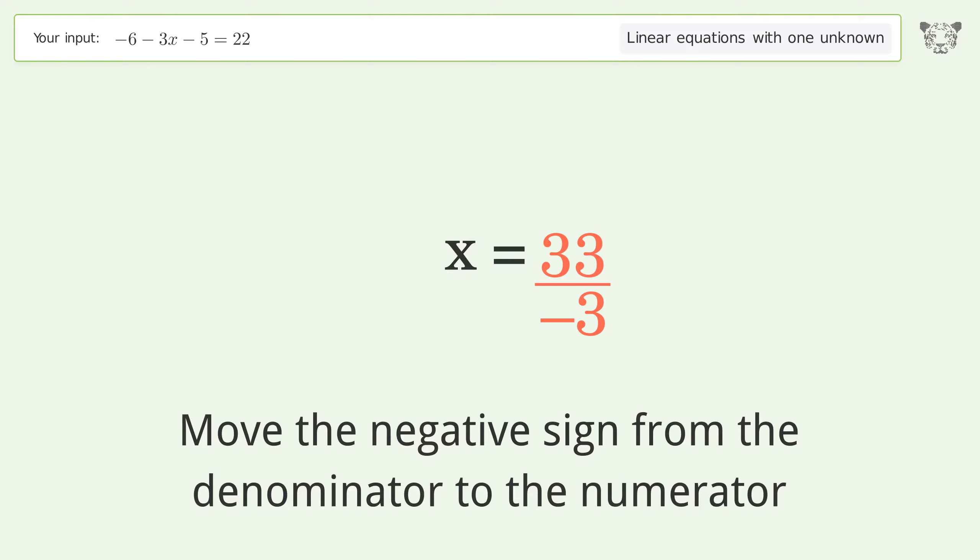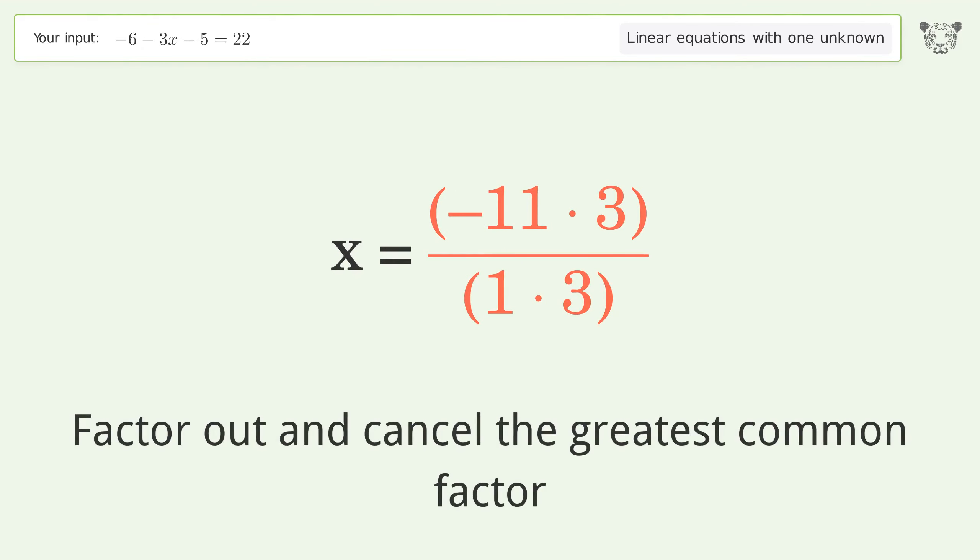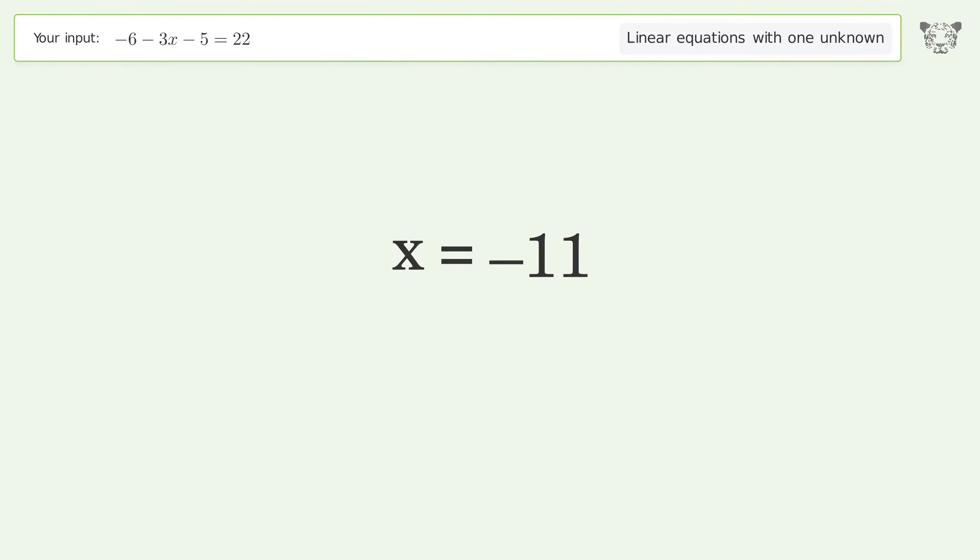Move the negative sign from the denominator to the numerator. Find the greatest common factor of the numerator and denominator. Factor out and cancel the greatest common factor. And so the final result is x equals negative 11.